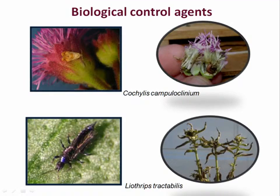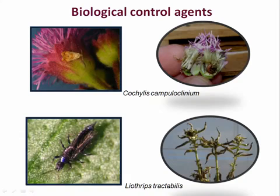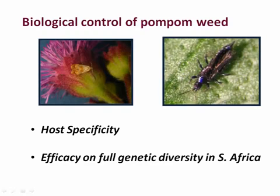The reason we are doing this work is because there are two biocontrol agents at advanced stages of testing in quarantine in South Africa. This is the flower-feeding moth and the thrips. The flower-feeding moth impacts on reproductive capability, while the thrips acts on new growth, thereby impacting on growth. The efficacy of these two agents will depend on how specific they are and their efficacy on the full genetic diversity in South Africa.